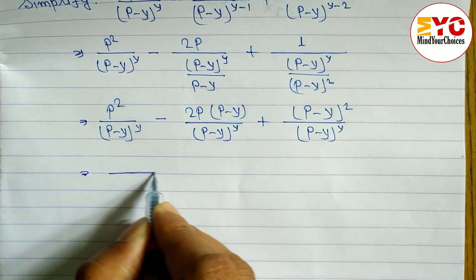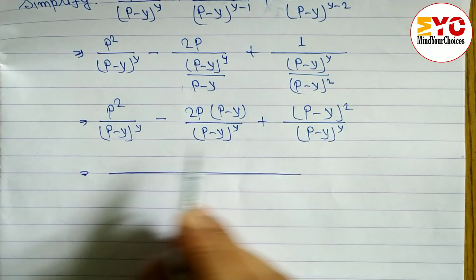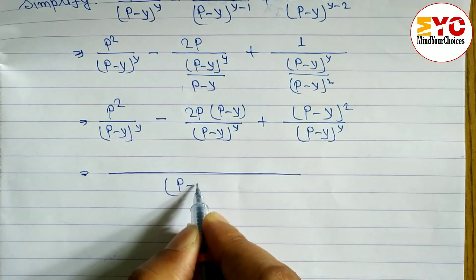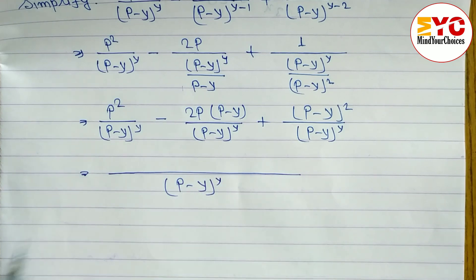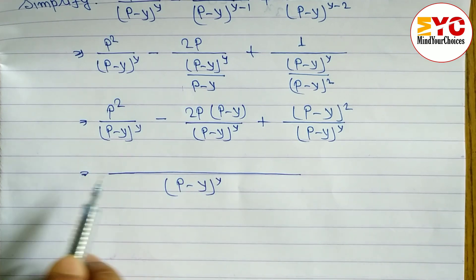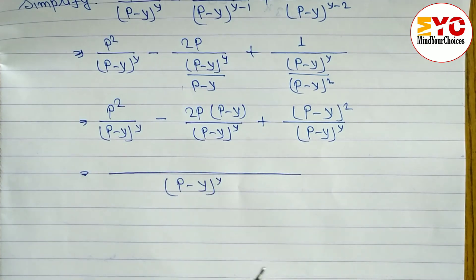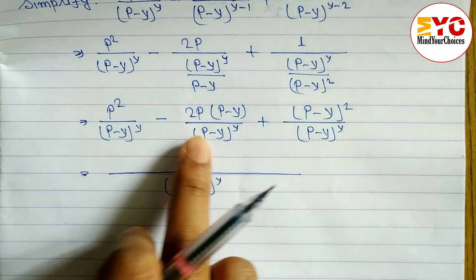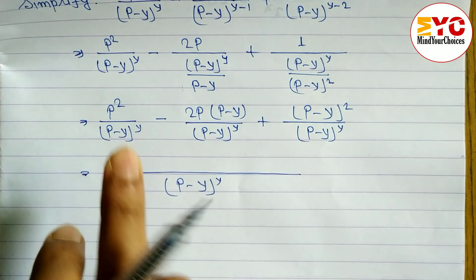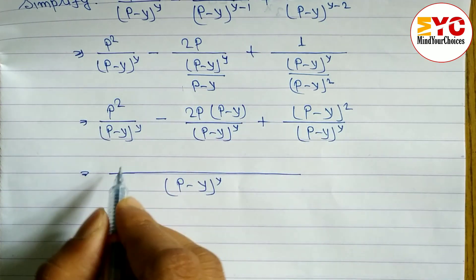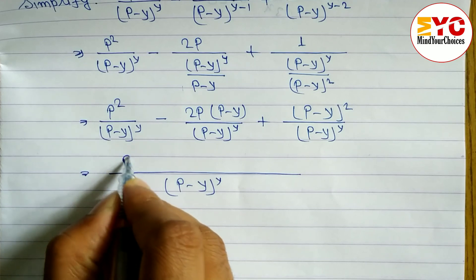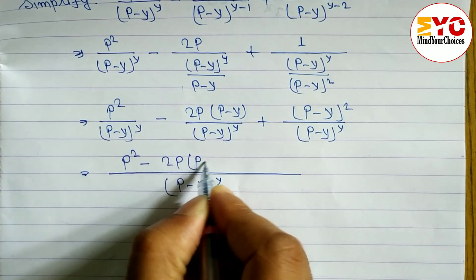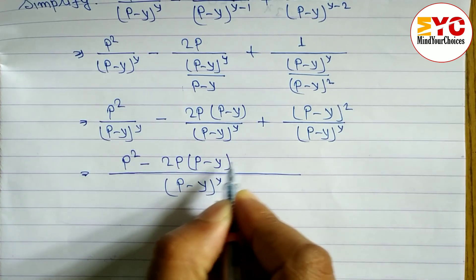You can see all the elements in the numerator have the same denominator (p−y)^y, so we write just the numerator elements combined: p² − 2p(p−y) + (p−y)².